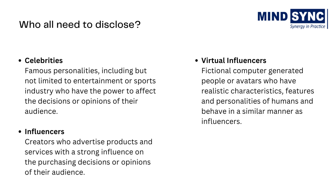The new guidelines outline who must disclose, when to disclose, and how to disclose. Celebrities — famous personalities, including but not limited to the entertainment or sports industry — who have the power to affect the decisions or opinions of their audience must disclose. Influencers and creators who advertise products and services with a strong influence on purchasing decisions must also disclose. Virtual influencers — fictional computer-generated people or avatars who have realistic characteristics, features, and personalities of humans and behave in a similar manner as influencers — all have to disclose in their endorsement.